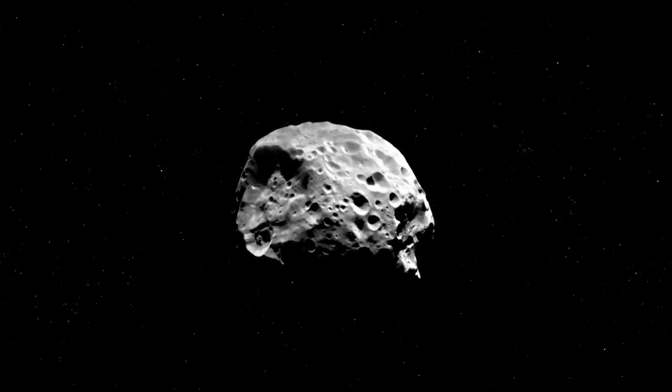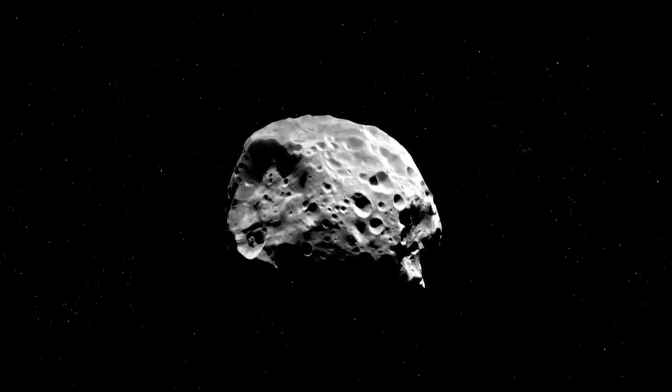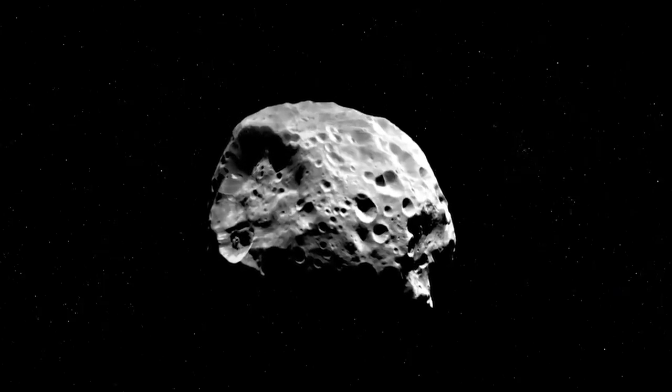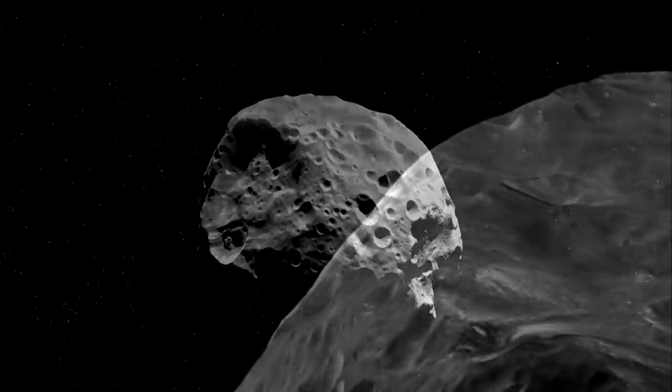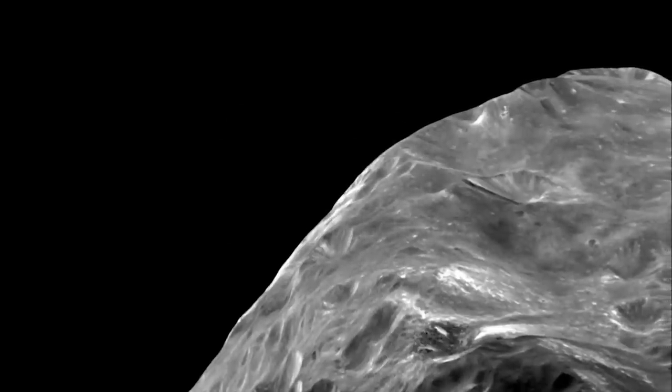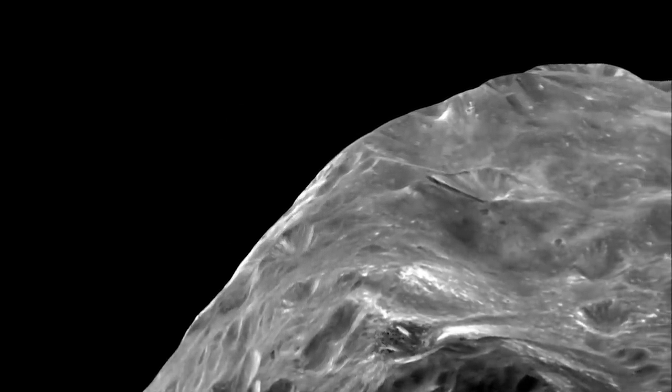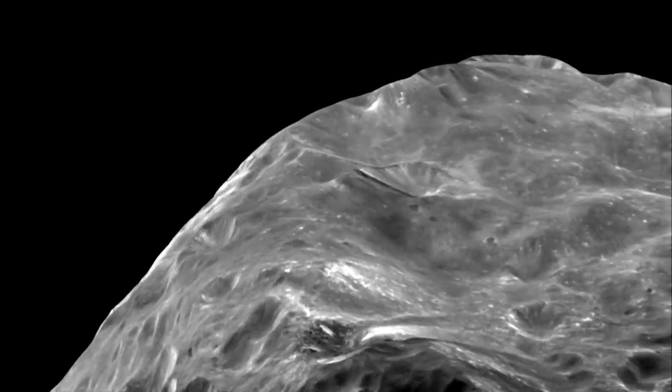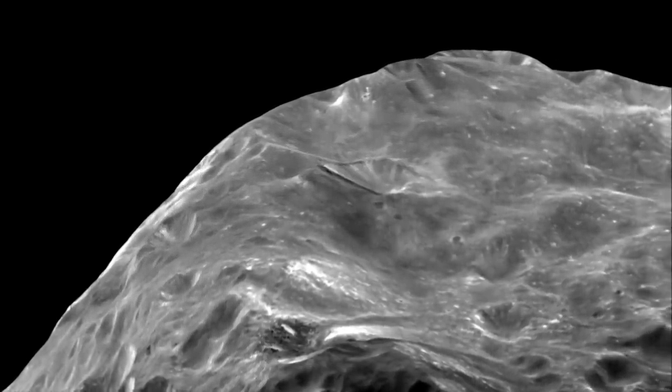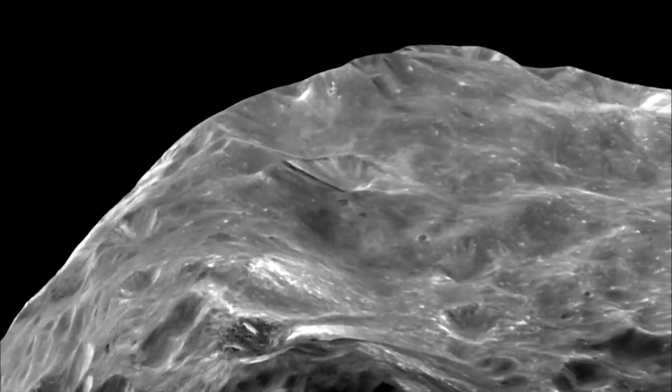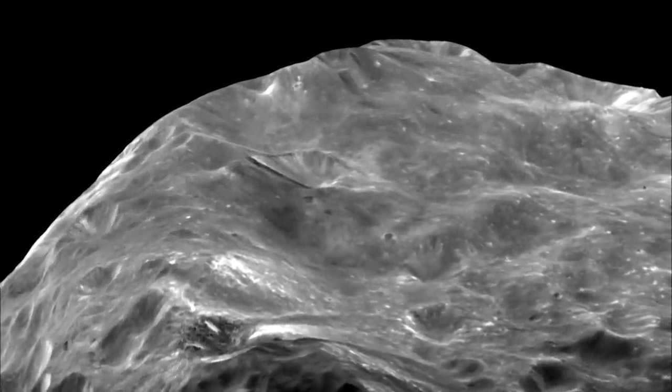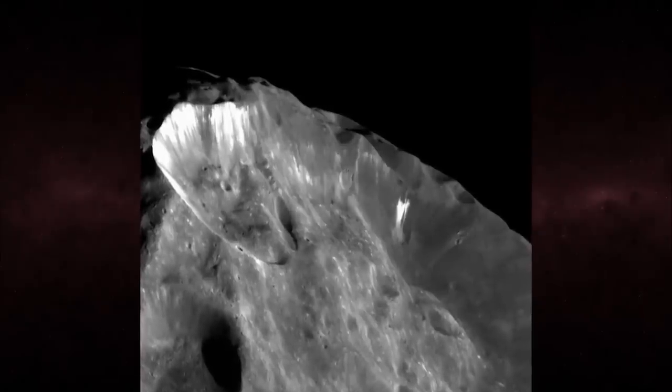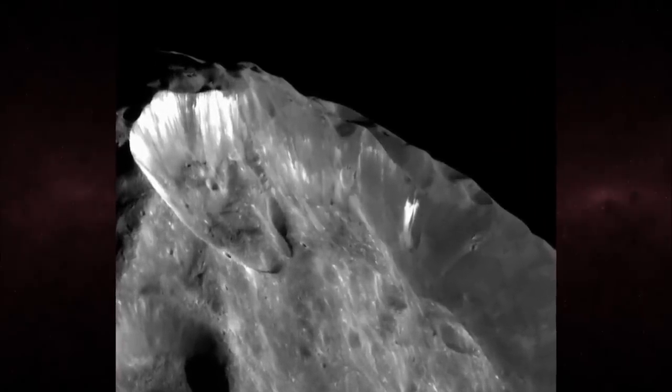This is certainly the case with Phoebe, the first of Saturn's moons that Cassini encountered up close. Just 200 kilometers across, Phoebe is too small and its gravity too weak to pull itself into a sphere. When Cassini sailed past Phoebe, it found a surface rich in carbon, with deep craters exposing layers of bright white ice lying just below.